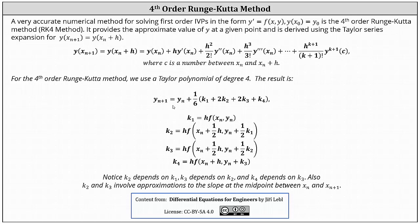The result gives y sub n+1 equals y sub n plus one-sixth times the sum of k sub 1, k sub 2, k sub 3, and k sub 4, where k sub 1 through k sub 4 are defined by the formulas shown.